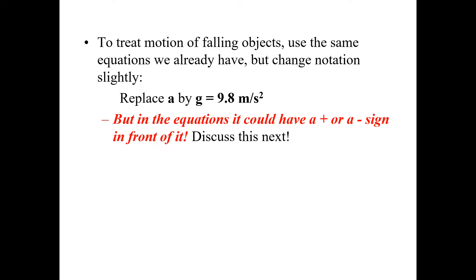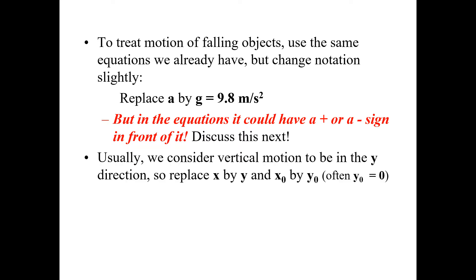In the equations, g could have a positive or a negative sign in front of it — we will discuss this. Normally, we use a positive or negative sign with g. We usually consider vertical motions to be in the y-direction; when horizontal, we use x. For vertical distance we use y, and for horizontal we use x.